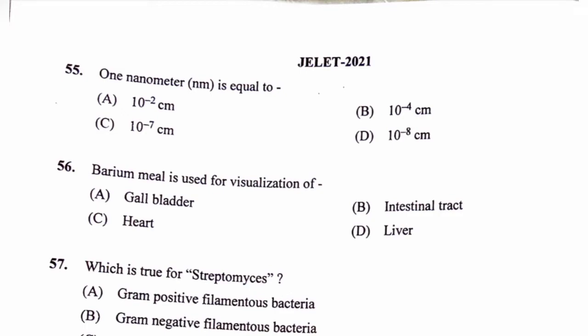Question number 55. 1 nanometer is equal to: option A, 10 to the power minus 2 cm; option B, 10 to the power minus 4 cm; option C, 10 to the power minus 7 cm; option D, 10 to the power minus 8 cm. The correct answer is option C, 10 to the power minus 7 cm. If you remember that 1 nanometer equals 10 to the power minus 6 mm, then you can calculate all the related parameters.